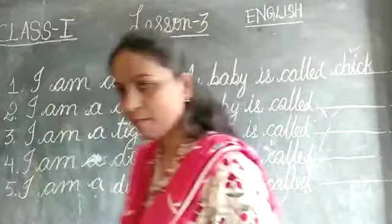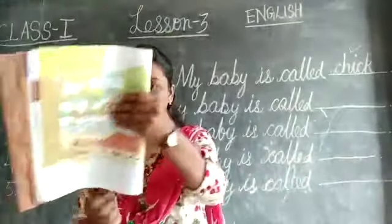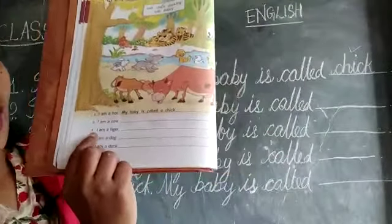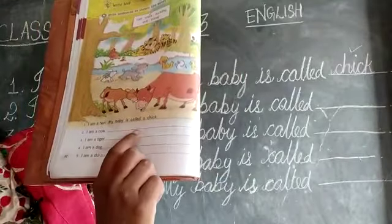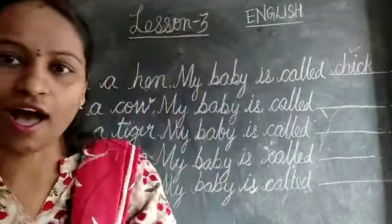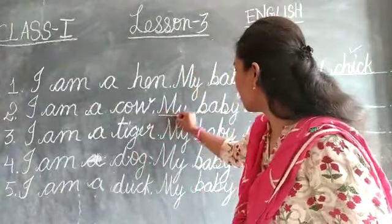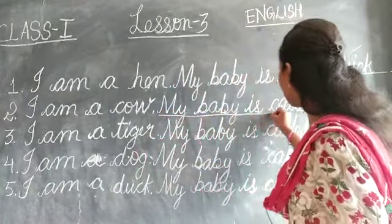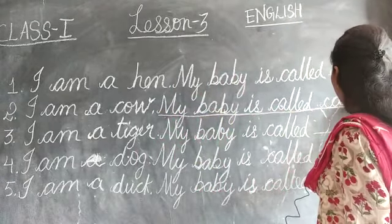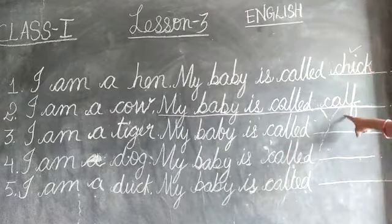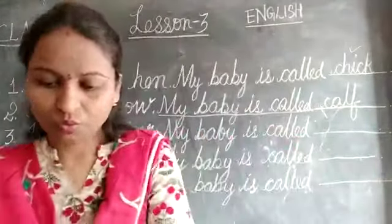Next: I am a cow. Second one, children — I am a cow. My baby is called a calf — that you have to write. So you have to write: my baby is called a calf — C-A-L-F. And then you have to tick the word in the box above.